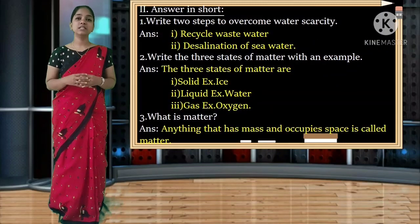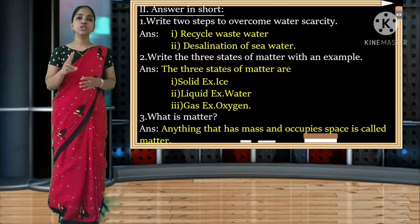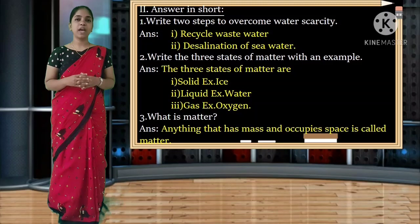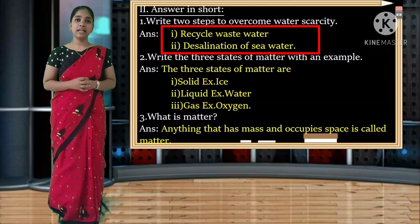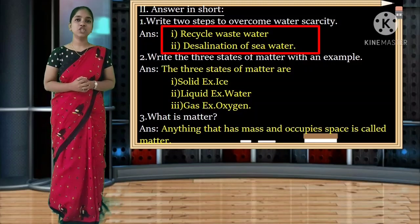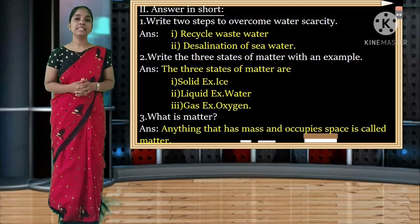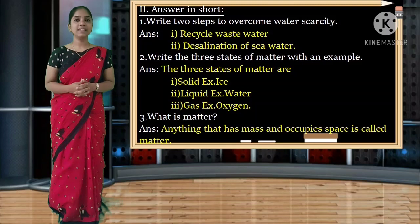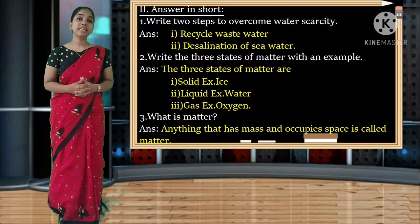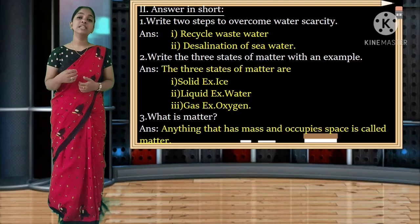Short answers. First: write two steps to overcome water scarcity. First point - recycle waste water. Spelling: R-E-C-Y-C-L-E. Second point - desalination of sea water. Spelling: D-E-S-A-L-I-N-A-T-I-O-N. These are the two steps: recycle waste water and desalination of sea water.